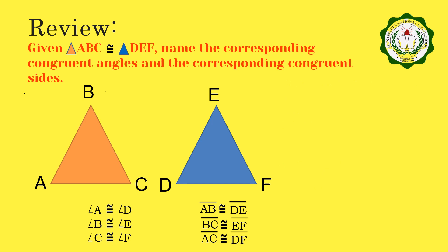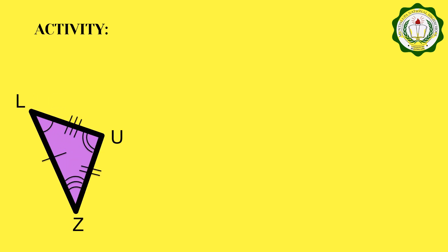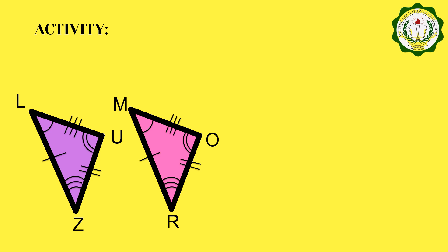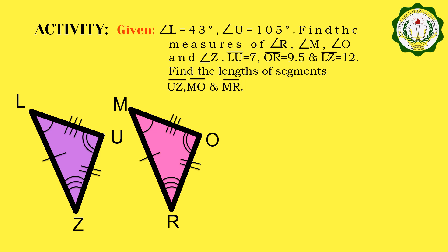For this lesson, we will now apply the concept of congruent triangles to solve for the unknown parts of congruent triangles. Now, let us have this activity. You are given triangle LUC and triangle MOR. As you can see, corresponding parts are similarly marked. We are given angle L is equal to 43 degrees, angle U is equal to 105 degrees. What you will do is to find the measures of angle R, angle M, angle O, and angle C.